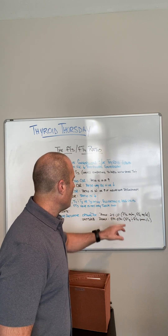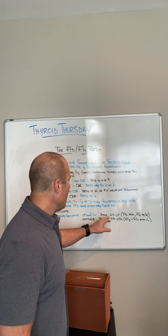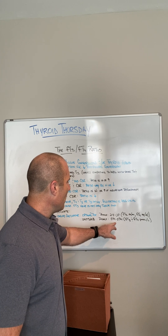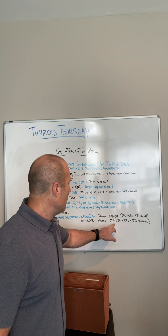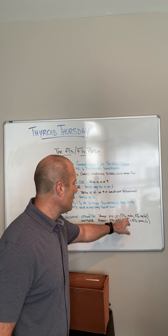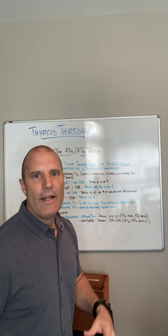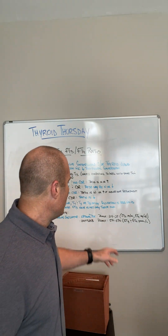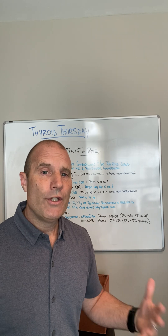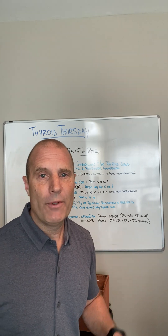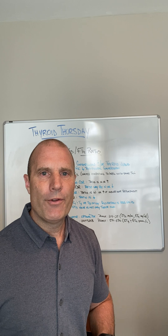Optimal DX uses a range of 2.4 to 2.7. The reason it differs from my 0.31 to 0.34 is that they don't change the units — they keep free T3 in picograms per milliliter and free T4 in nanograms per deciliter and do the calculation directly. That's why the numbers differ. This is what I see in the clinical literature, which is why I use it. This can be a really good tool to know how well you're converting T4 to T3, along with looking at the rest of your labs. If you have any questions, put them below, and stay tuned for more Thyroid Thursday videos.